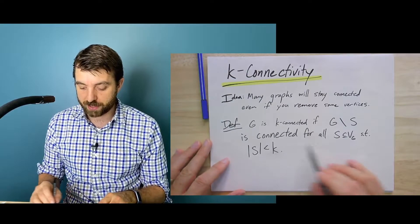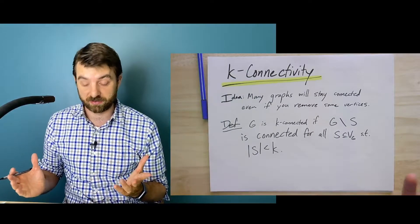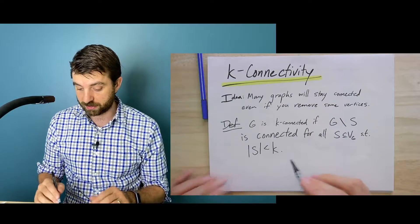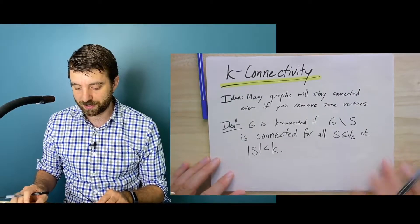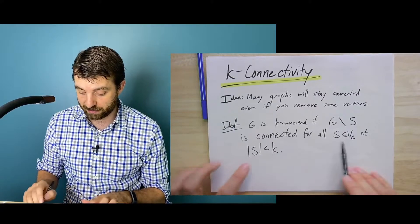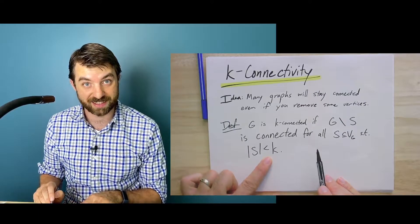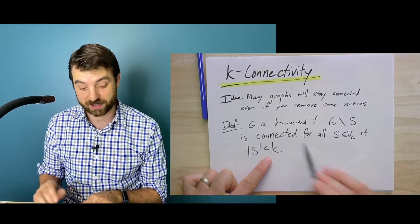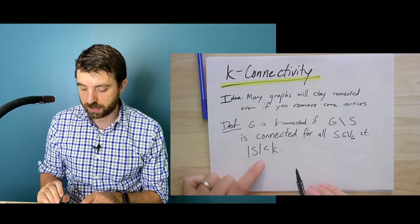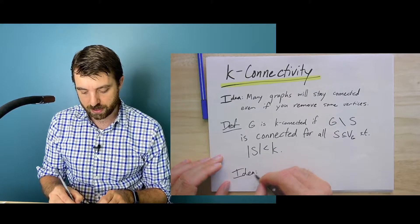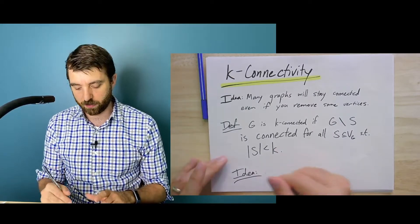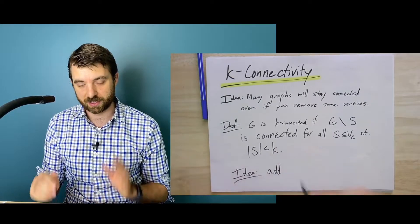This is a direct generalization of what we've called connectivity before. You'll see that if I just set K equal to one, there's only one subset of vertices of size less than one. That's the empty set. And it's really just saying that the graph is connected. So again, the idea here is that we're adding robustness to connectivity.